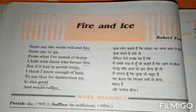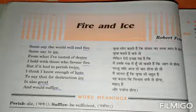That is the poem written by Robert Frost. I hope you have understood it very well. It is a very short poem. In this poem, the poet wants to convey that the world will end in two different ways. The first way is that it will end with fire, and the second way is that it will end with ice. That's all for today. Thank you, have a nice day.